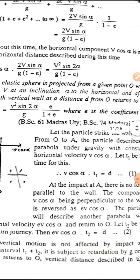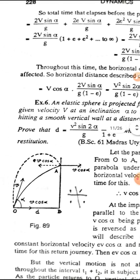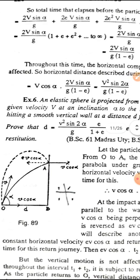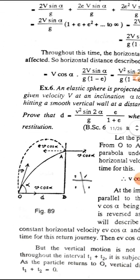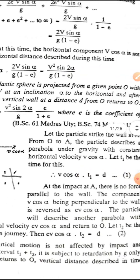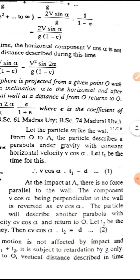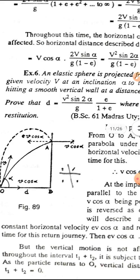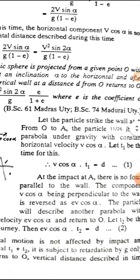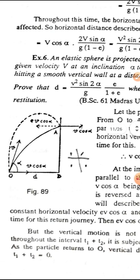Next problem: an elastic sphere is projected from a given point O with given velocity v at an angle alpha to the horizontal, and after hitting the smooth vertical wall at a distance d from O, returns to O. Prove that d equals v squared sin 2 alpha divided by g into e by 1 plus e, where e is the coefficient of restitution.